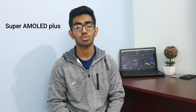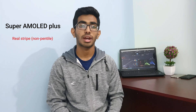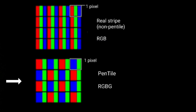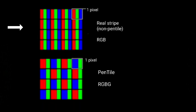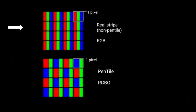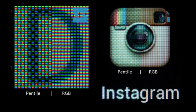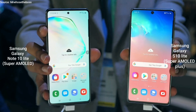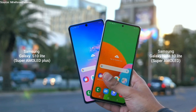Next is Super AMOLED Plus, which has a different pixel arrangement compared to Super AMOLED. Super AMOLED Plus uses real stripe subpixels rather than pentile subpixels. Pentile has two subpixels — RG and BG — while non-pentile has three: R, G, and B. So Super AMOLED Plus uses a traditional RGB arrangement with 50% more subpixels than Super AMOLED, resulting in less grainy and sharper images at the same resolution. LCD displays also use the traditional non-pentile subpixel layout.